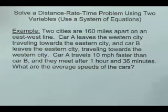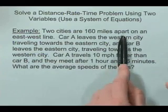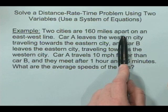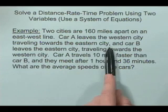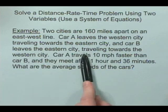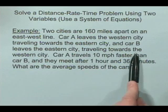Let us look at an example of a distance rate-time, or DRT, problem involving two variables. Here's our situation. We're going to look at two cities that are 160 miles apart on an east-west line. We'll pretend that there's just one road connecting them. Car A is leaving the western city and traveling toward the eastern city. Car B leaves the eastern city and travels toward the western city.